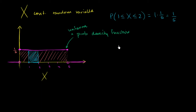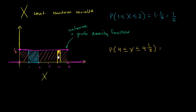What is the probability that x is greater than or equal to 4 and less than or equal to 4 and 1/3? The range is from 4 to 4⅓, which is right about there. The area under the curve in this range is a rectangle. The base between 4 and 4⅓ is a distance of 1/3, and the height is 1/5, so 1/3 times 1/5 equals 1/15.